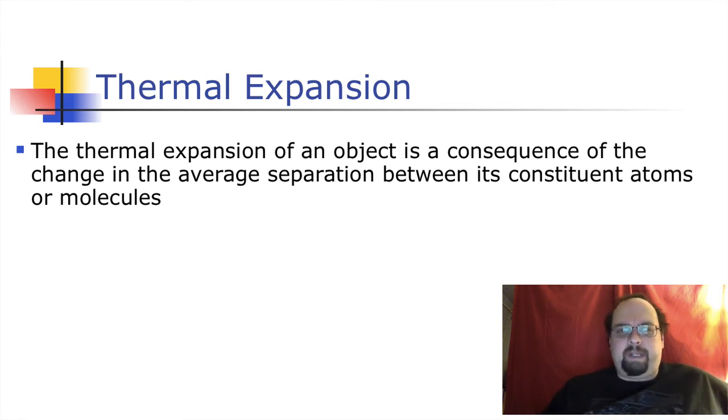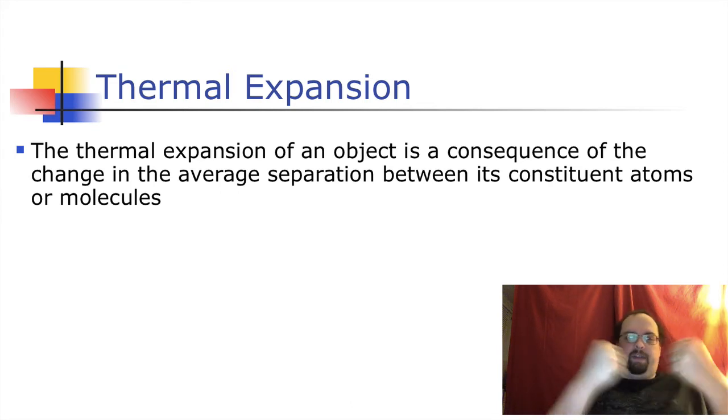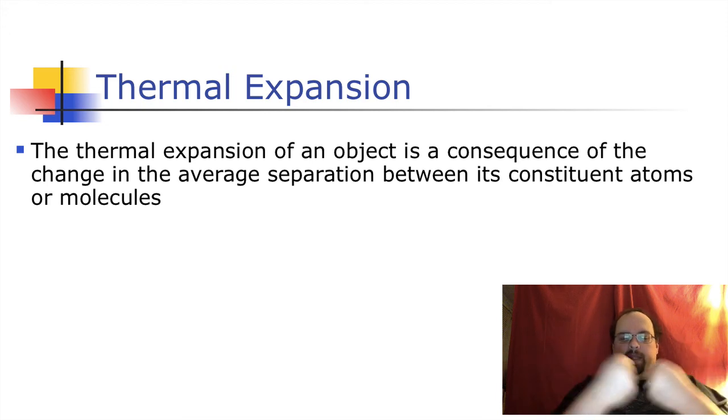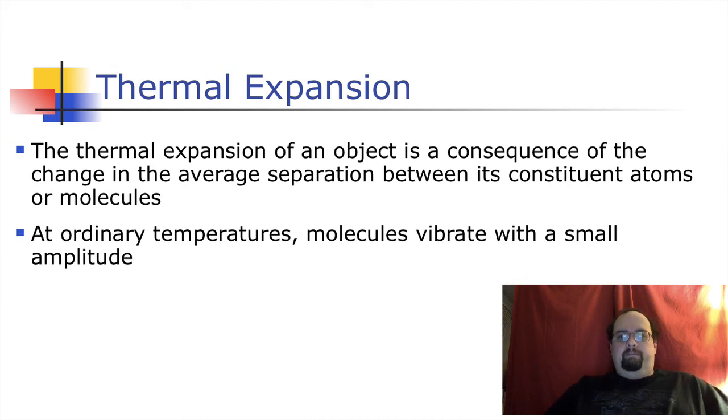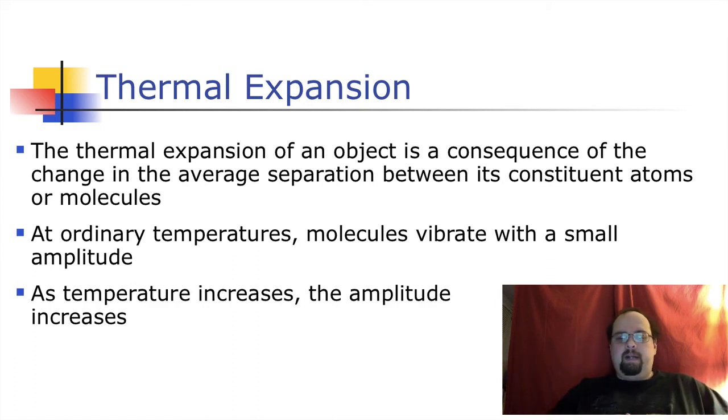So it turns out when objects change their temperature, they often change their size, especially certain solids. Well, actually, solids, liquids, and gases. But it's a little easier to measure, I guess, with a solid. So what happens is molecules in a solid are all fairly close to each other. It turns out the colder they are, the less they are moving. And the warmer they are, the faster they are moving. Their average motion is a little bit higher. They have some energy in between them and in the bonds. And so the more they sort of slam into each other, the greater the average distance between the constituent atoms and molecules is. So at low temperatures, they vibrate with a small amplitude. And at high temperatures, the amplitude increases and gets higher and higher. Until it gets such to the point where they sort of lose their connections with each other. And that would be melting if the pressure is high enough.